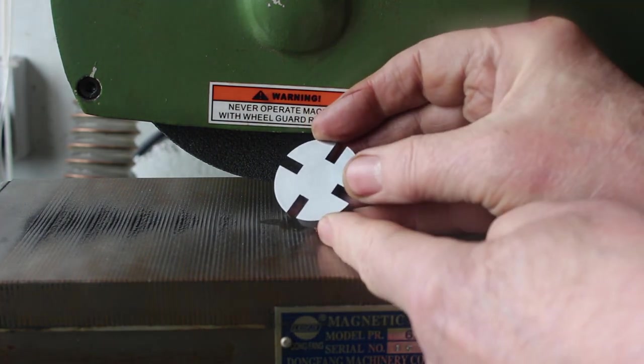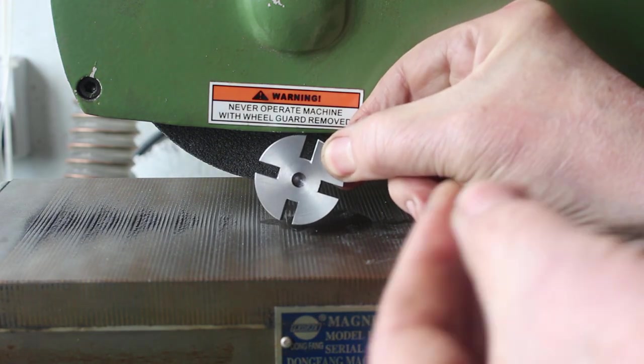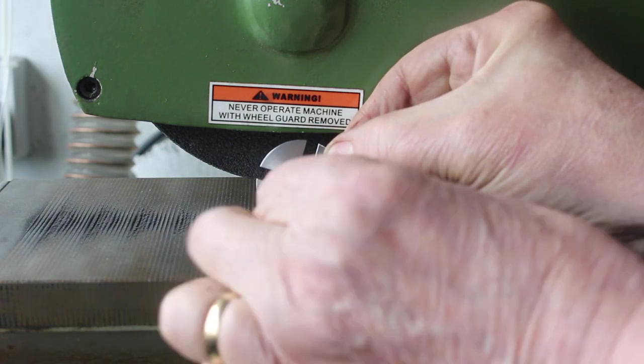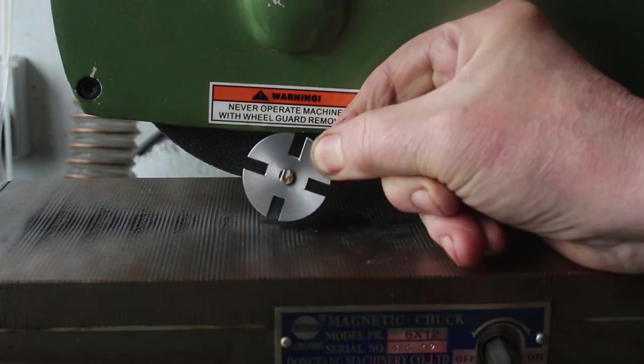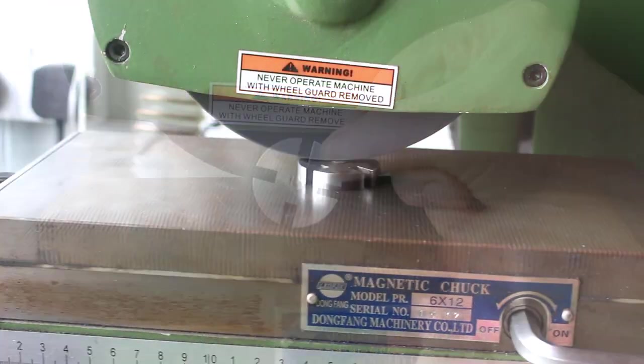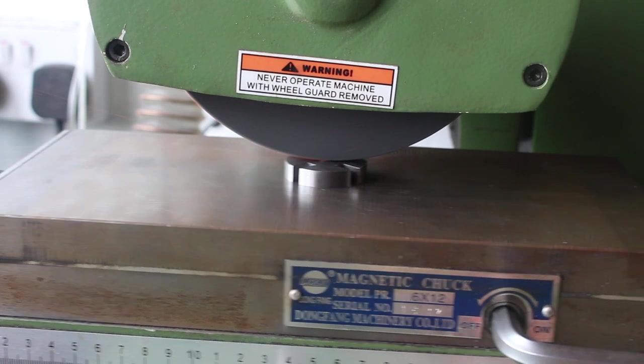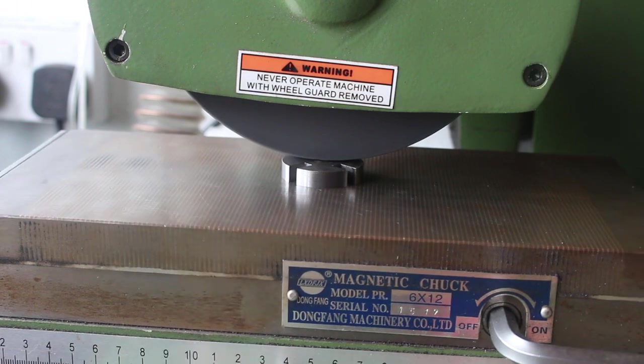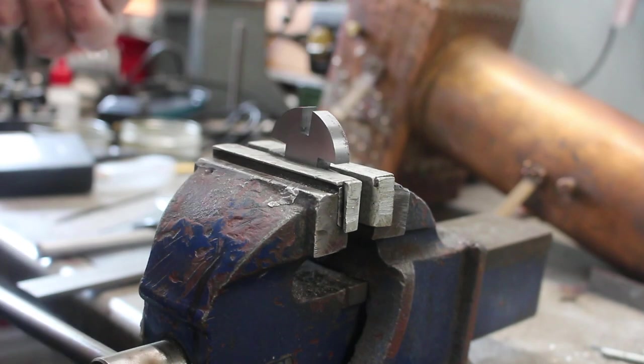So I've surface ground one side. On the other side I'm just going to fit this little piece of high speed steel. I'll Loctite that in and that'll be ground flat. So we'll just break the edges.